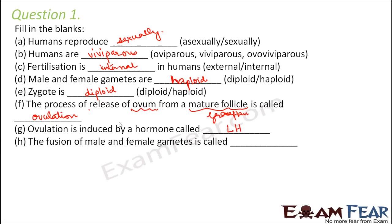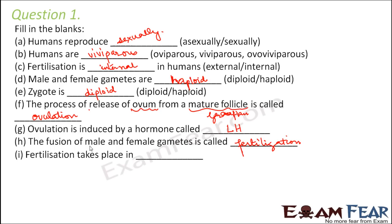Fusion of male and female gametes is called fertilization. Where does fertilization take place? It takes place inside the female body — specifically in the fallopian tube, and more precisely in the ampulla region of the fallopian tube.